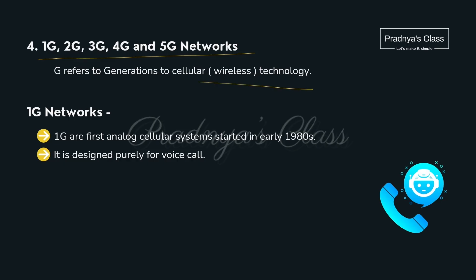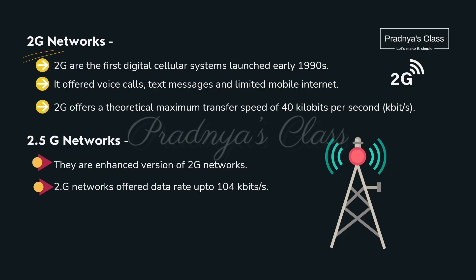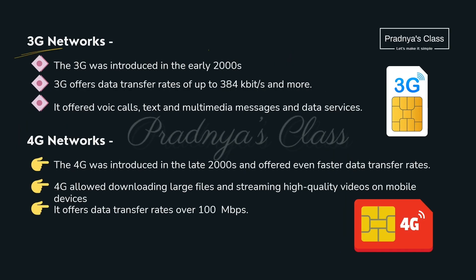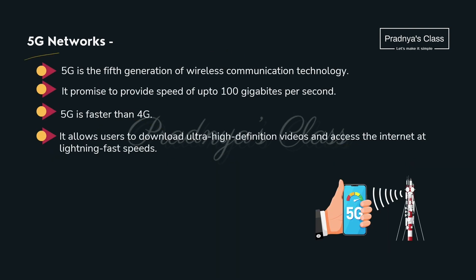Here are the different generations of wireless technology. 1G started around 1980, followed by 2G launched in 1990. The enhanced version of 2G is 2.5G. 3G was introduced in 2000, and in the late 2000s we got 4G, which provides faster data rates and lets you stream high quality videos on mobile devices. The latest is 5G, the fifth generation of wireless communication technology, providing a speed of almost 100 gigabits per second — fast enough to download ultra-high-definition videos at lightning speed.